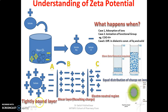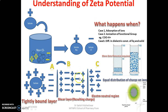There are three layers: the tightly bound layer, the shear layer (or diffuse layer), and a neutral region where all ions are equally distributed. The difference between the tightly bound layer and the shear layer is the Zeta potential. The shear layer does not allow the solute particles to come together, maintaining repulsion. These three layers form in your suspension system.